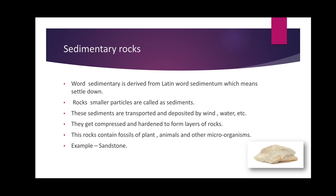Sedimentary rocks contain fossils of plants, animals, and organisms that once lived. Fossils are the remains of dead plants and animals that were trapped in the layers of rock as those layers were forming. An example of a sedimentary rock is sandstone — small grains of sand are transported, deposited, compressed, and formed layer upon layer to create sandstone. That is the second type of rock: sedimentary rock.